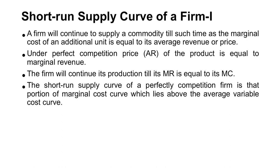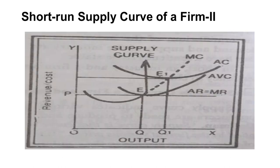If the marginal cost curve is above the average variable cost curve, it is known as the short-run supply curve of a firm in perfect competition. Looking at the graph: on the X-axis there is output and on the Y-axis there is revenue and cost. When price is OP, the firm's equilibrium output is OQ, where AR and MR are equal and the MC curve cuts the MR curve from below — E is the equilibrium point.